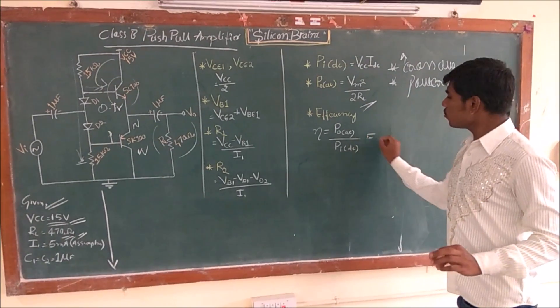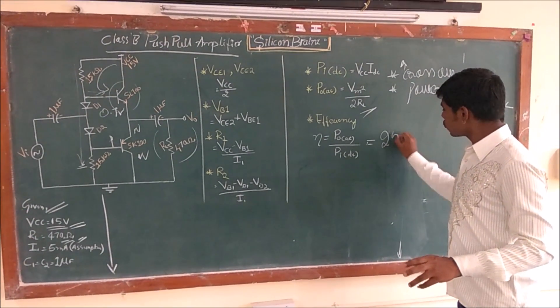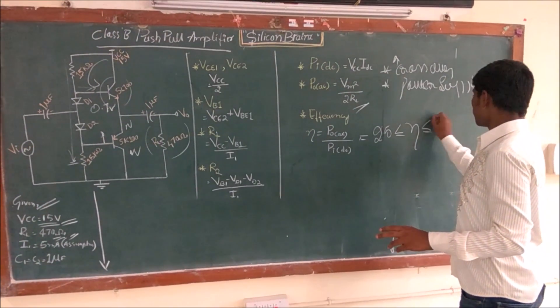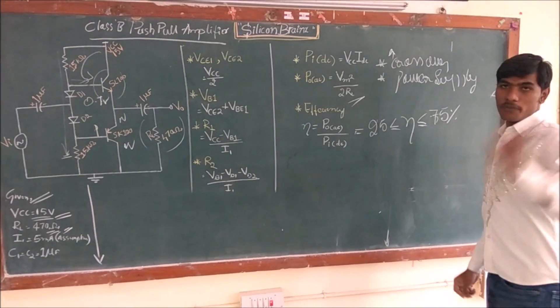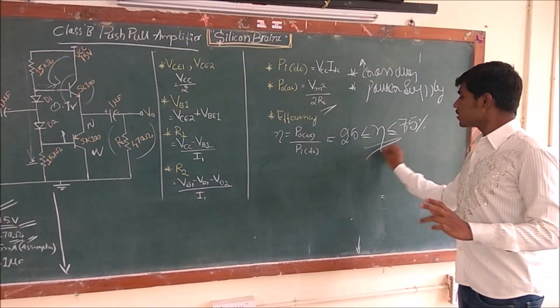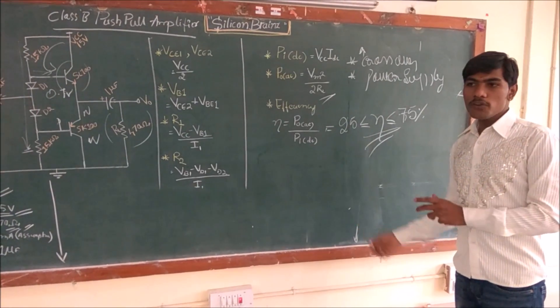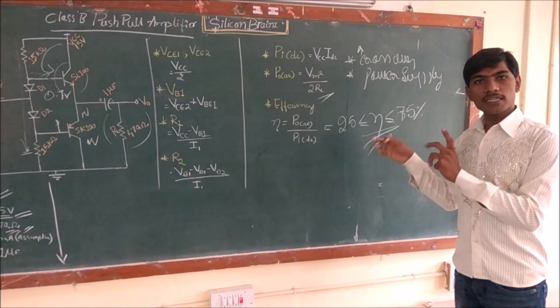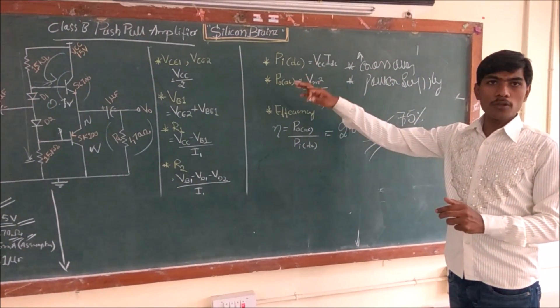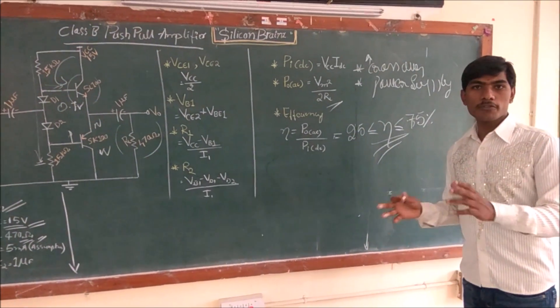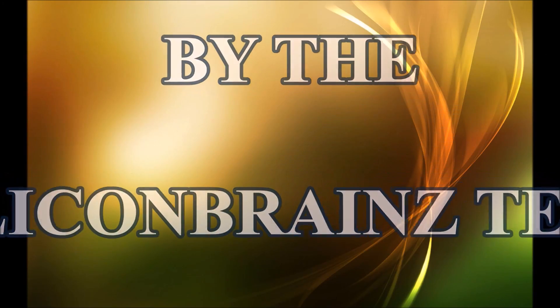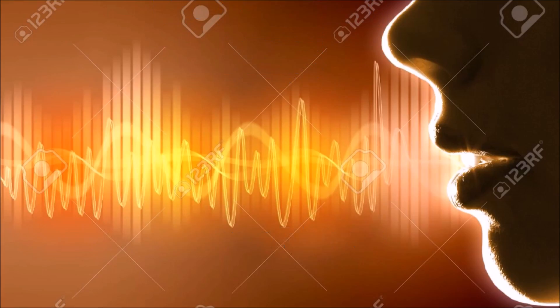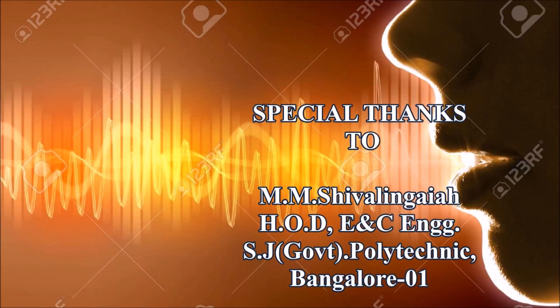If you take the efficiency, P0 AC divided by PDC, it's around 25% above, up to 75%. For Class B it's 50%, for this it's 75%. We will see this in practical case in our next session. We will see Class B and Class B push-pull with bias. Thank you.